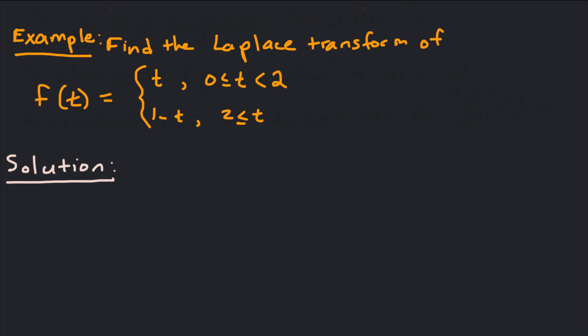So if we look at the example, it says find the Laplace transform of the function f of t, which equals t for 0 to 2, and then from 2 to infinity, it's the function 1 minus t. So we want to find the Laplace transform of this piecewise function.